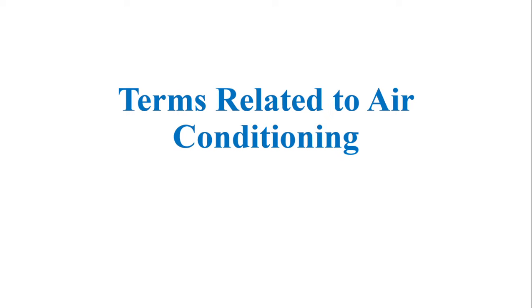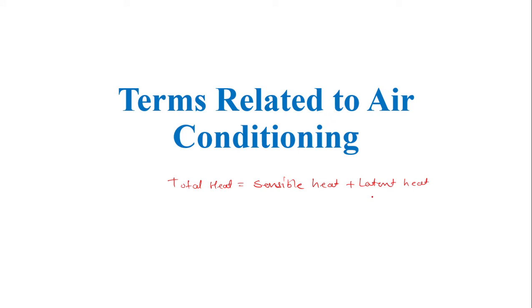In this video we are going to see some terms related to air conditioning. Basically in air conditioning, the heat from the room is removed — that total heat is the sum of the sensible heat generated inside the room plus the latent heat generated inside the room.